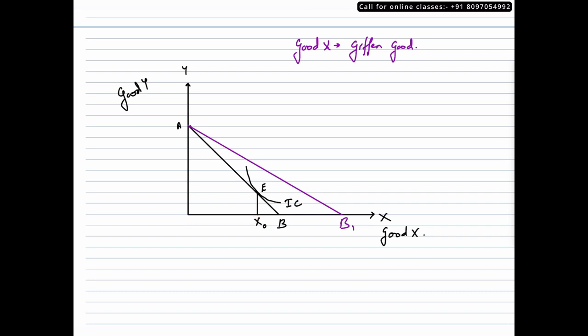In this scenario, the consumer may land up at IC1 with E1 as the point of intersection and he'll be consuming x1 quantity of the Giffen good which is lesser than before. This is how it would be represented on the indifference curve analysis scenario.